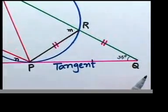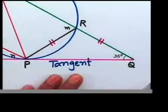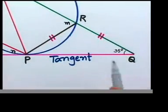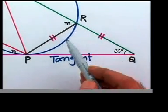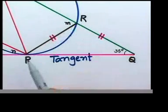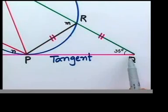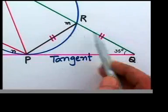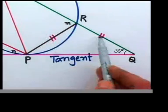I would like to start at this point here. What is the reason why I should start here? I got a triangle RPQ where two sides are equal.